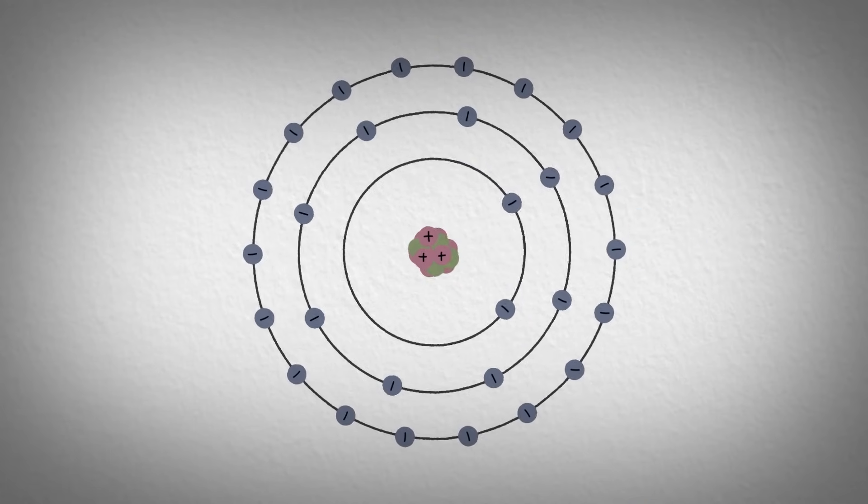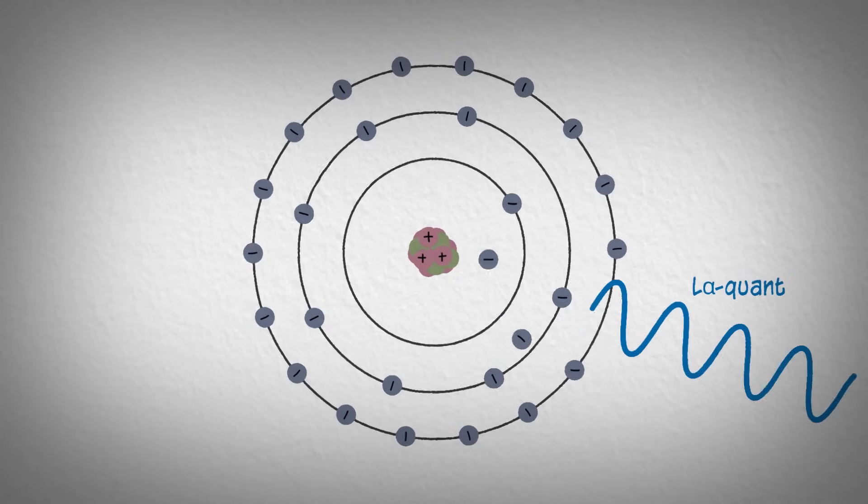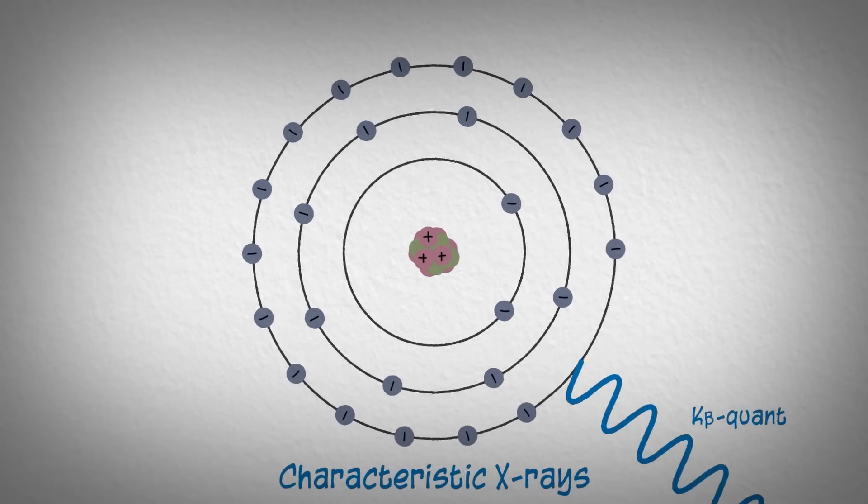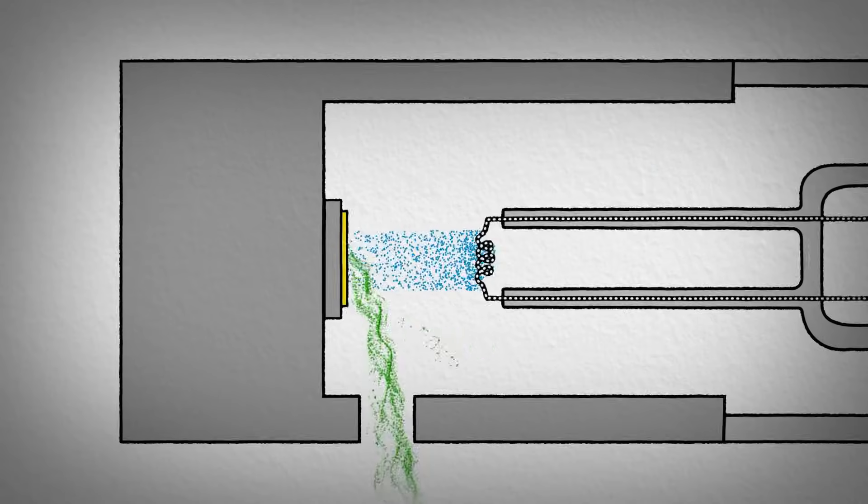The second possibility is that an electron is knocked out of the atom. The hole is filled by a higher energy electron, resulting in the emission of an X-ray with a very specific energy. These are called characteristic X-rays, leading to characteristic radiation. This is what is used in X-ray diffraction.